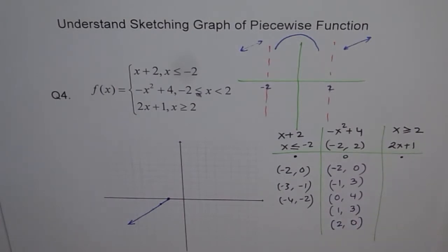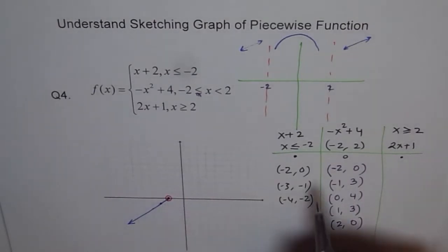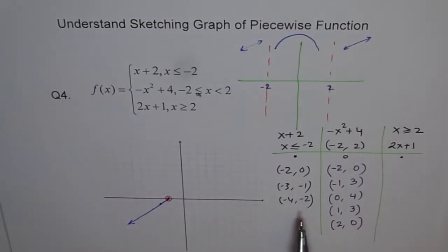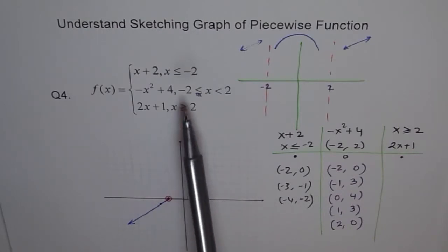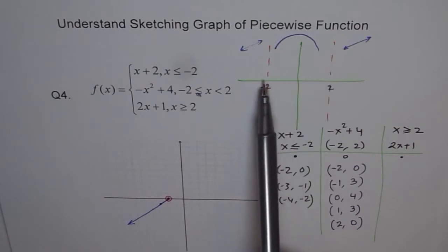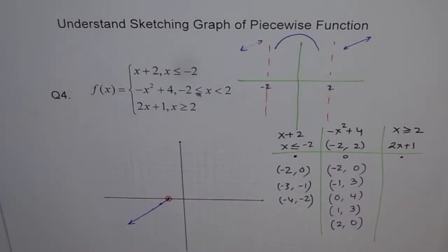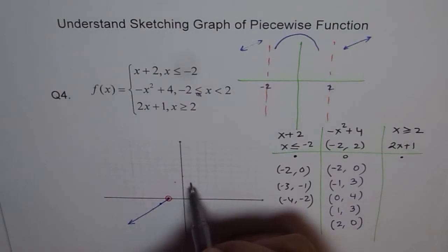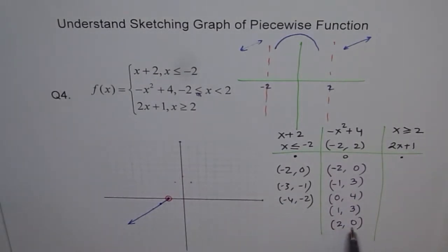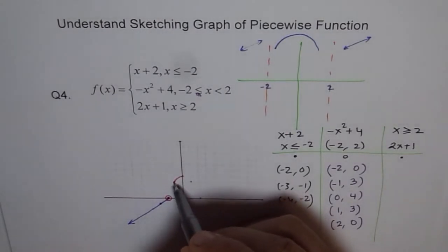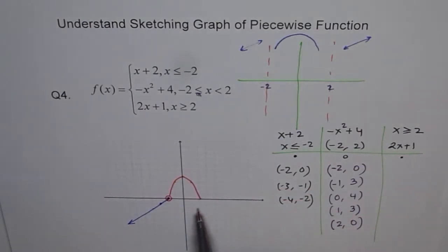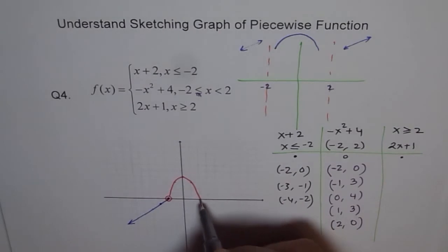We start with minus 2 which is a hole at y equals 0. This hole overlaps our first piece, so the function is continuous at minus 2. There are only two possible points of discontinuity — at minus 2 and at 2. We've confirmed continuity at minus 2. Plotting the parabola: minus 1 gives 3, 0 gives 4, 1 gives 3, and at 2 we get 0 — but that endpoint is also an open hole.